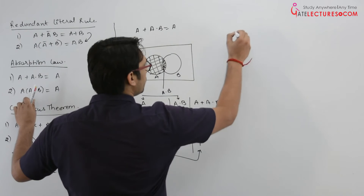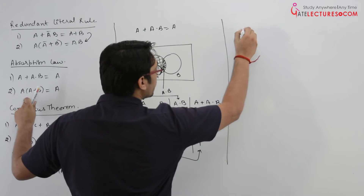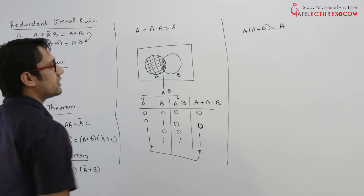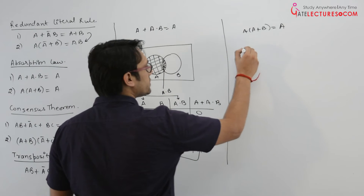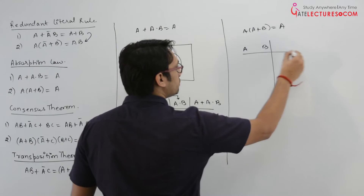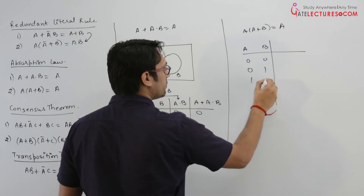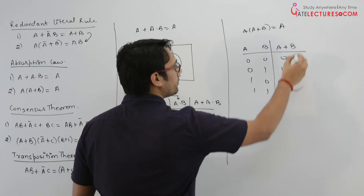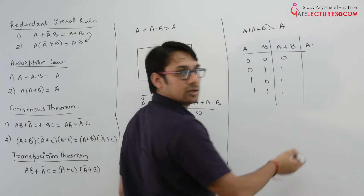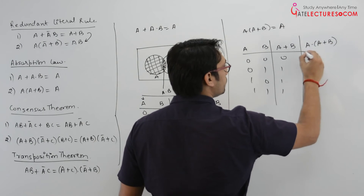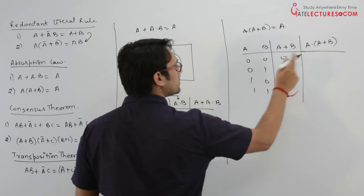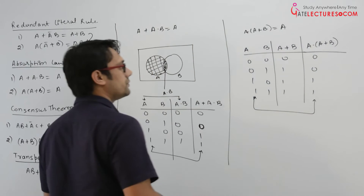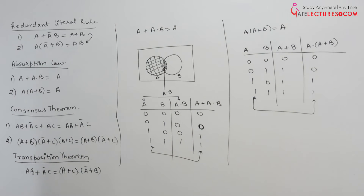Next, the dual form of absorption law: A dot A plus B equals A. This is just a dual form. Combinations of A and B are 00, 01, 10, 11. A plus B is 0, 1, 1, 1. A dot A plus B is 0, 0, 1, 1 — which is equal to A itself. Therefore the absorption law holds in this case also.